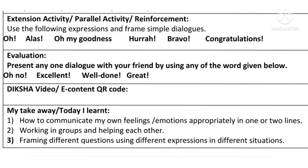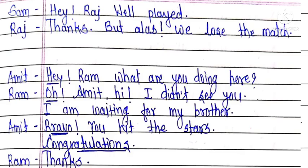I have made two dialogues for you. First one: Sam — Hey Raj, well played. Raj — Thanks. But alas, we lost the match. This was a very short two-line dialogue. Then the next is: Amit — Hey Ram, what are you doing here? Ram — Oh Amit, hi, I didn't see you. I am waiting for my brother. Amit — Bravo, you hit the stars. Congratulations. Ram — Thanks. So in this way, you can prepare short conversations using other expressions or interjections.